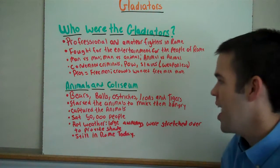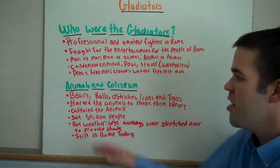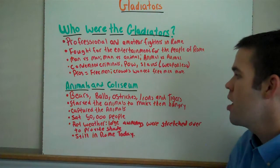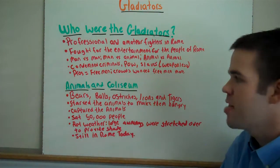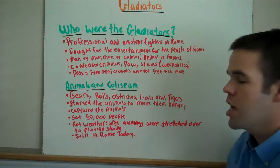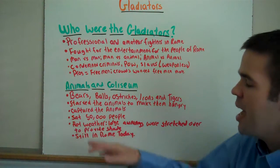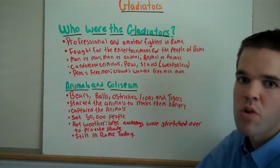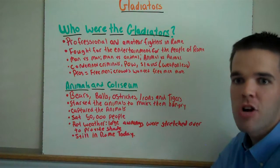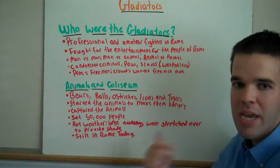Oftentimes the handlers of these animals would starve them to make the animals as hungry as possible. They also captured the animals from exotic locations. As a result of starving the animals, they would be so hungry that when they went into the gladiator arena, they would go right after the human or right after another animal, making it worthwhile for entertainment purposes. Gladiator fights were often for two reasons: pride — it's always about pride in ancient times, pride in your homeland — and death. If you lose, you're most likely going to die; if you win, it's all about pride.